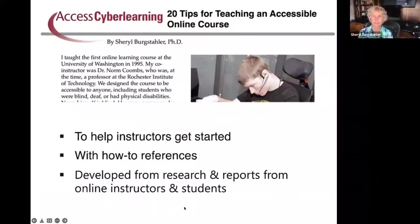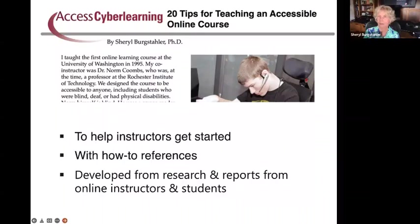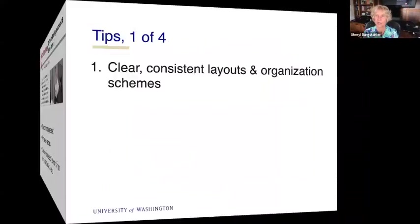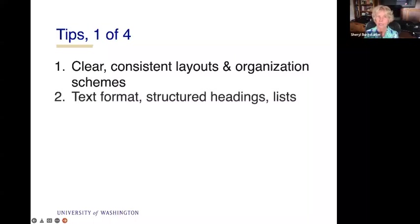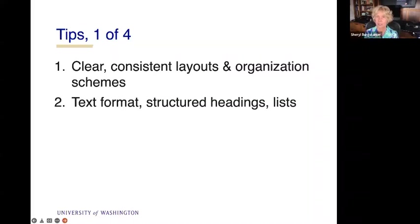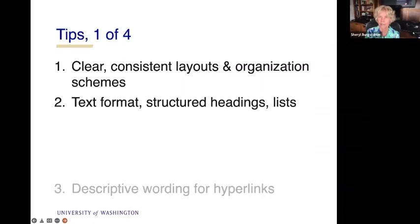I'm going to go through 20 tips for an accessible online course that we developed through a lot of literature review. Most of them we've covered already, and the handout has references that tell you where you can find out how to do these things. Here are a few things as a summary: clear, consistent layouts and organizational schemes — so important, particularly for students with executive functioning issues, attention deficits, and other learning disabilities. Text format is for Jesse, and structured headings and structured lists are important so that Hadi can participate as well. Descriptive wording for hyperlinks — that's a Hadi thing.